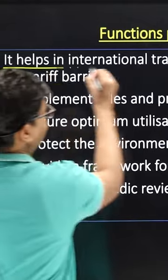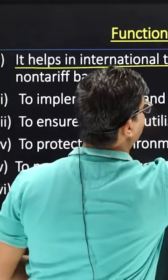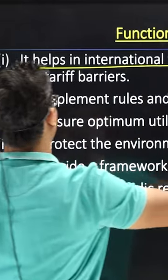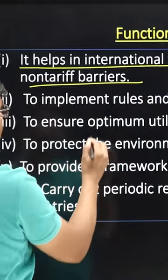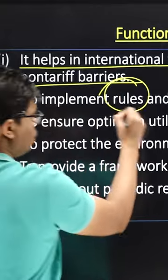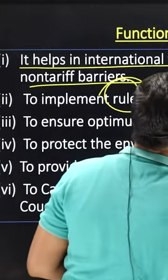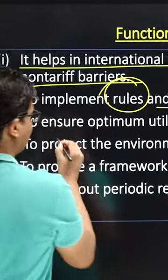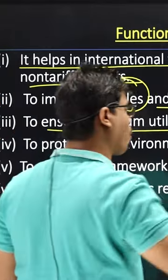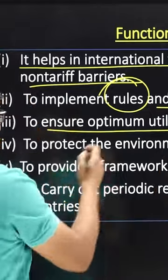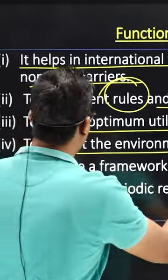What is WTO's function? It promotes international trade by reducing taxes, tariff and non-tariff barriers. It sets rule regulations and trade policy. It also focuses on world resources and their optimum utilization, and works to protect the environment.